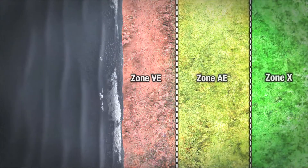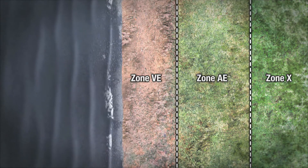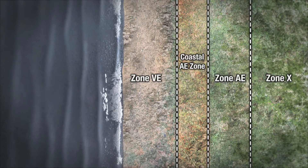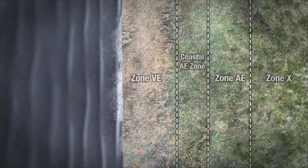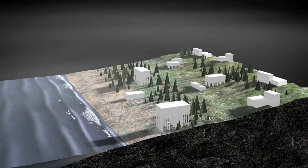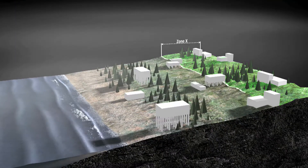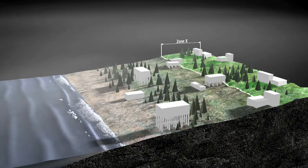There are three basic coastal zones and one new zone in the new NFIP maps. Flood Zone X is considered to be a low risk of flooding.